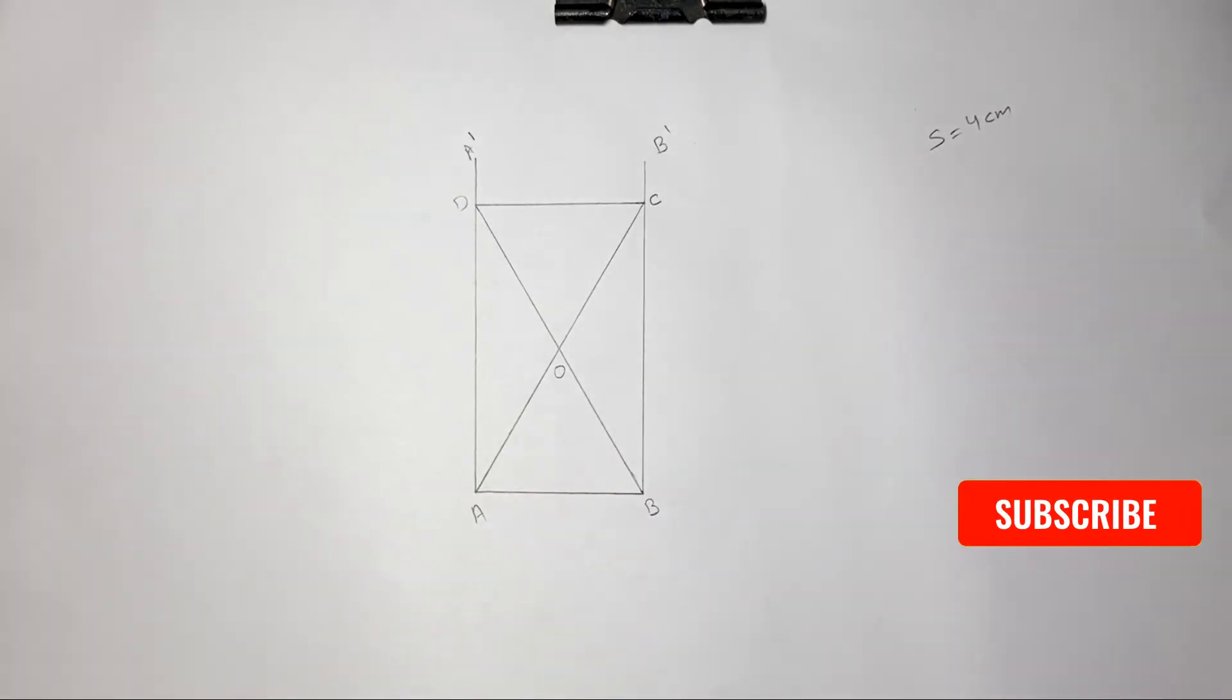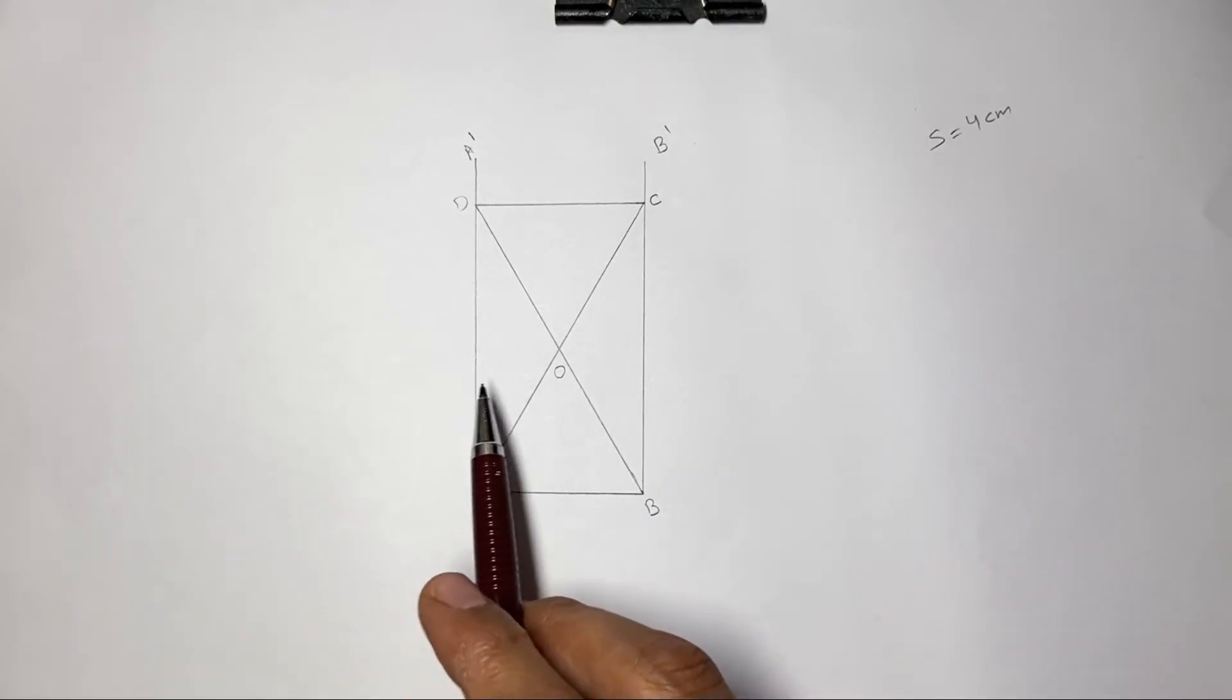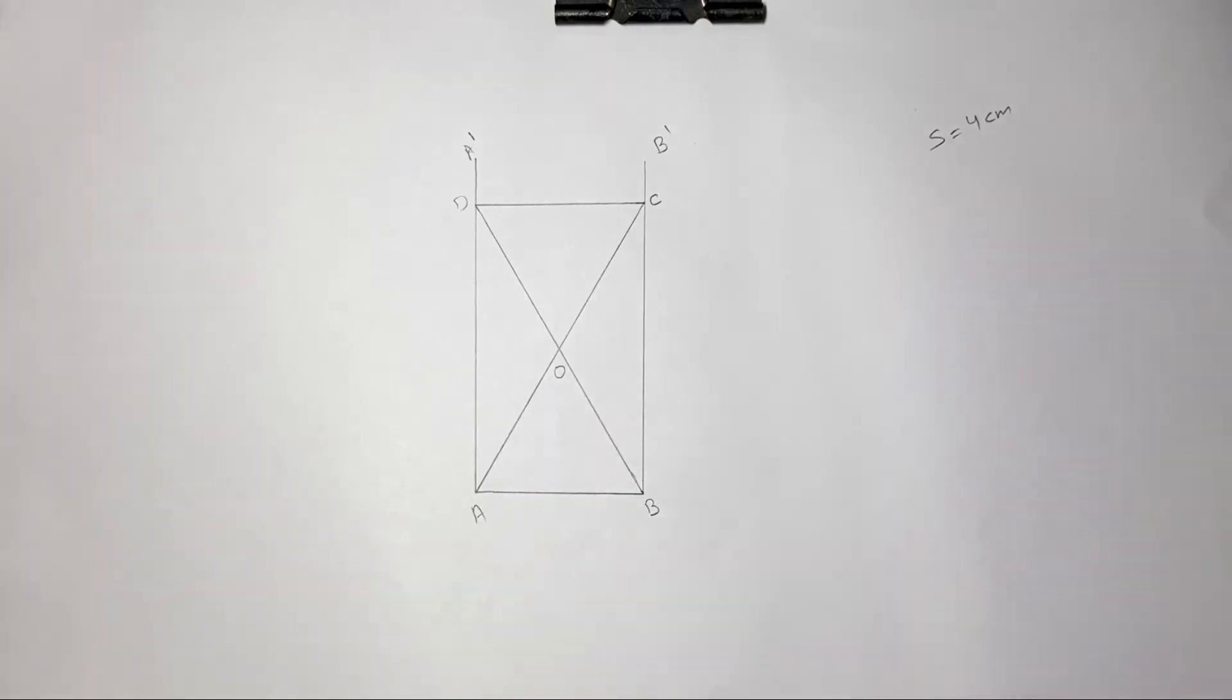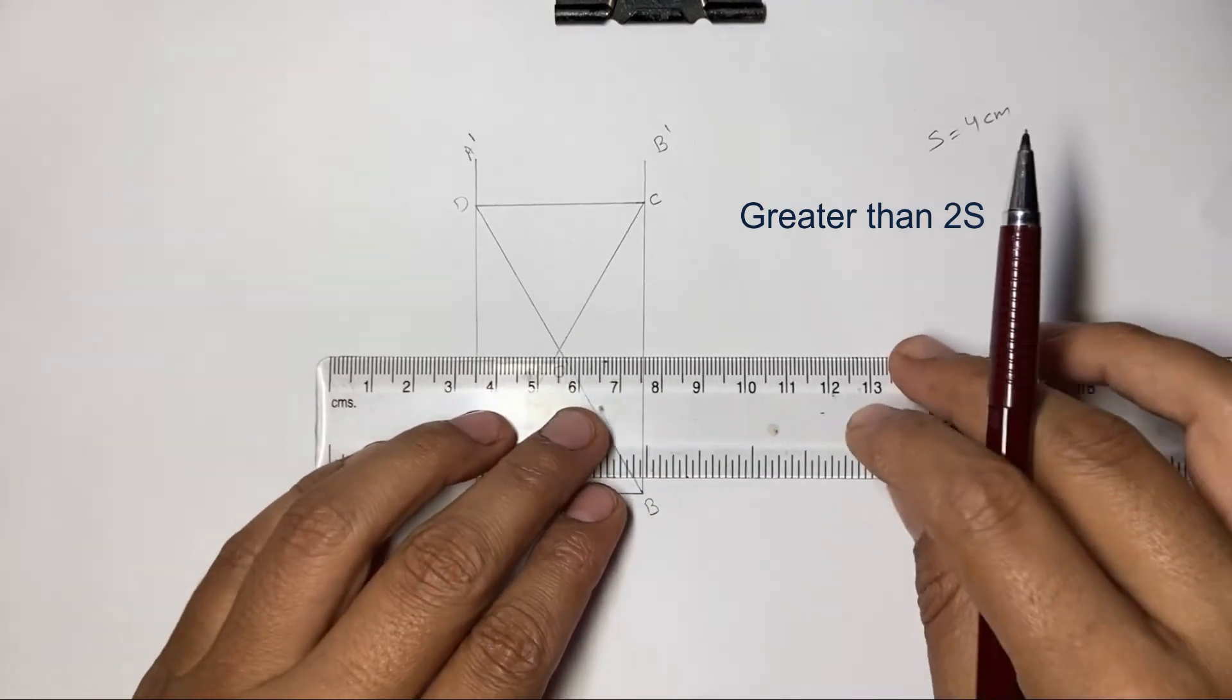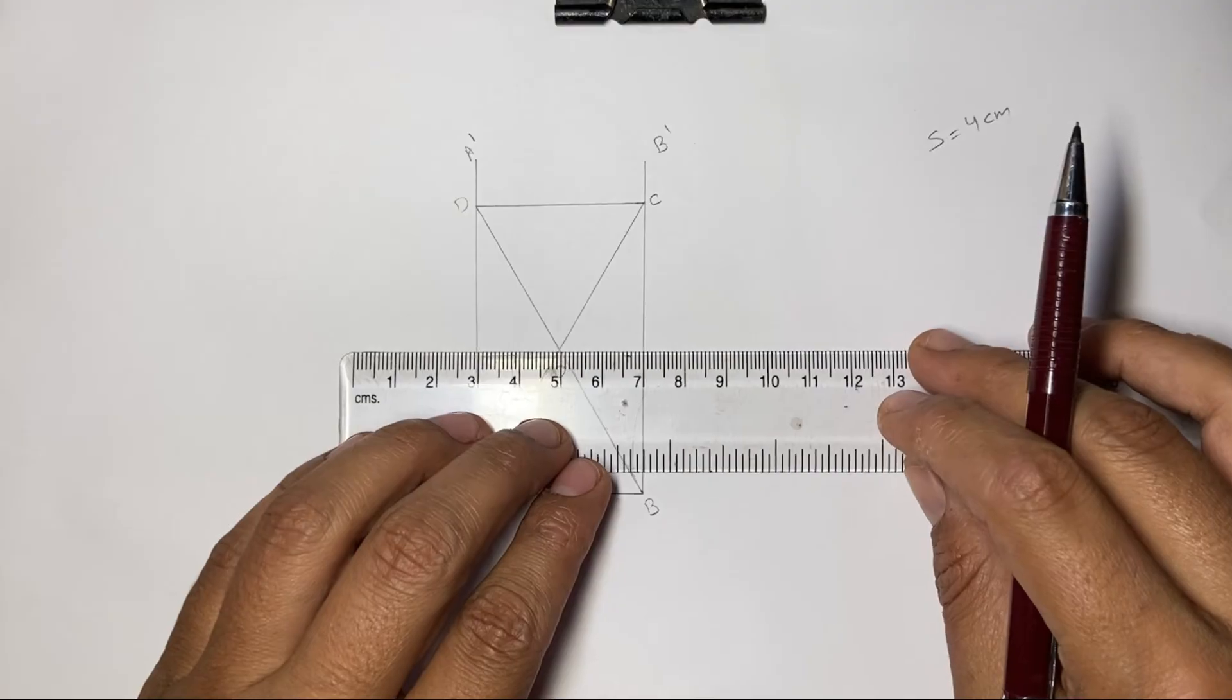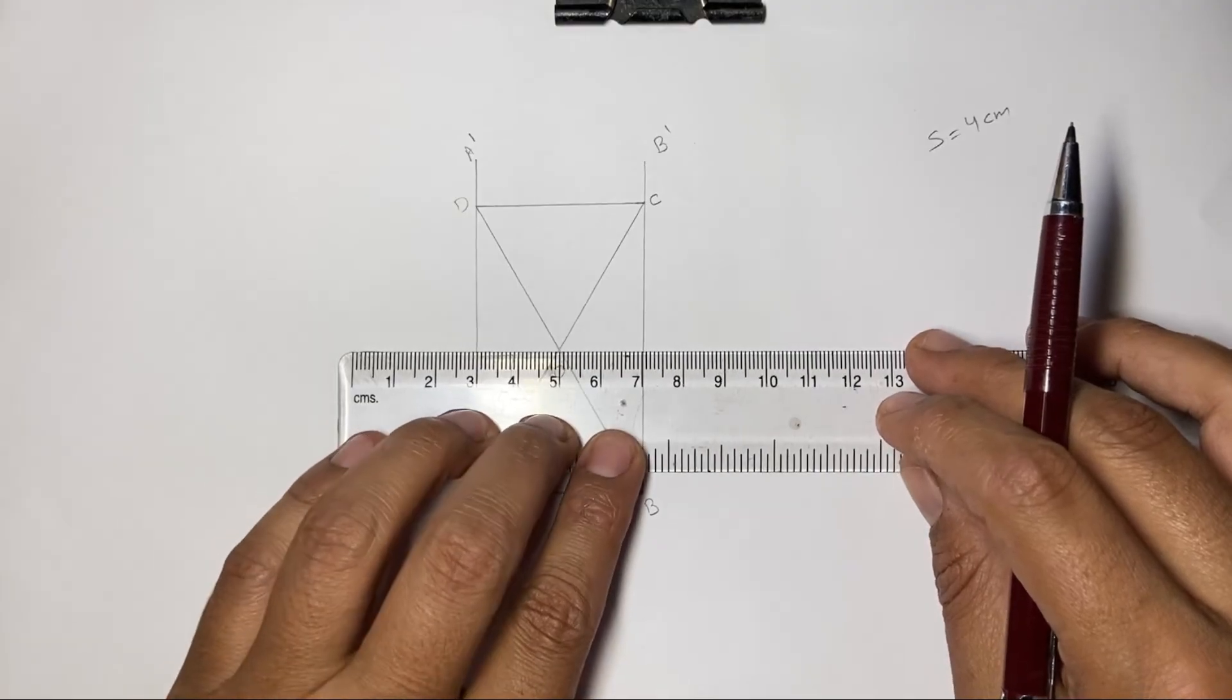This is the second side of our hexagon. Now let us name this intersection as point O. Now we have to draw another guideline which will be parallel to line AB and will pass through point O. It should be greater than the length of our side and the center of this line should be on point O.